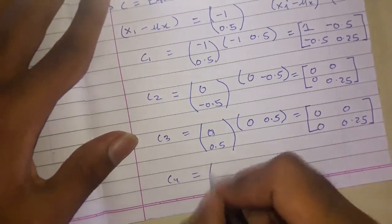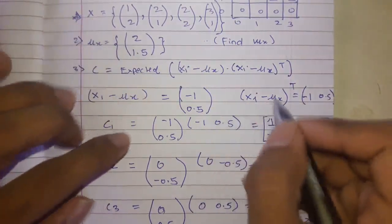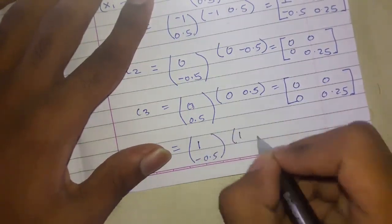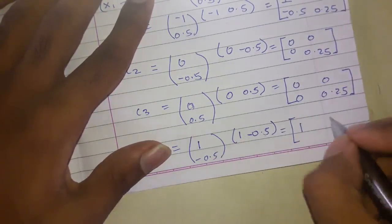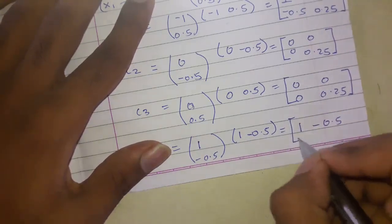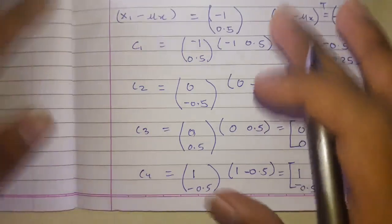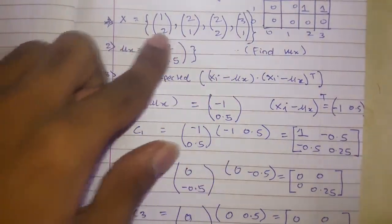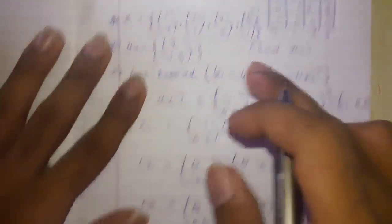For c4: x4 = (3,1), so x4−μx = [1, −0.5]. Multiplying by its transpose gives c4 = [1, −0.5; −0.5, 0.25]. The number of vectors (4) determines how many ci matrices we compute — here c1 through c4.